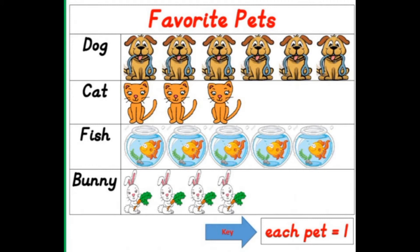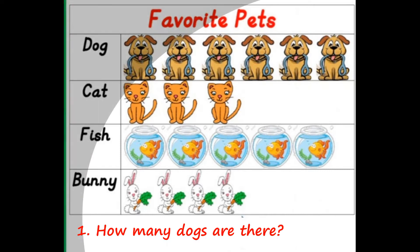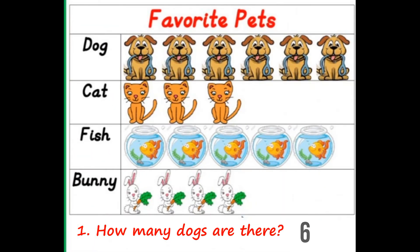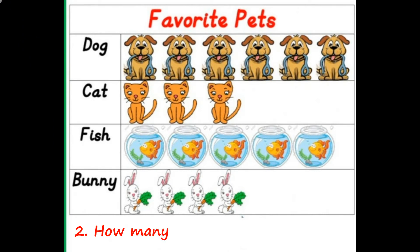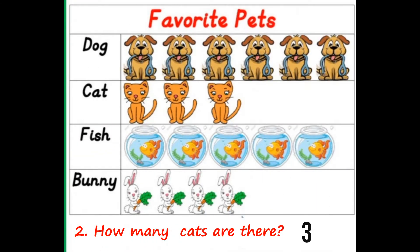Let's see how much information there is in this picture graph. How many dogs are there? Six. How many cats are there? Three.